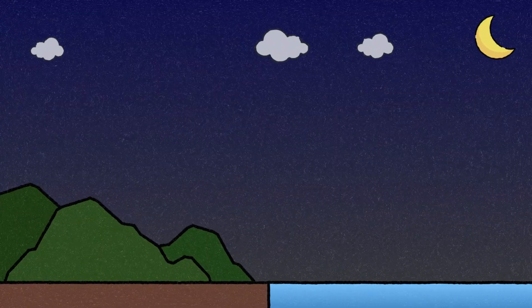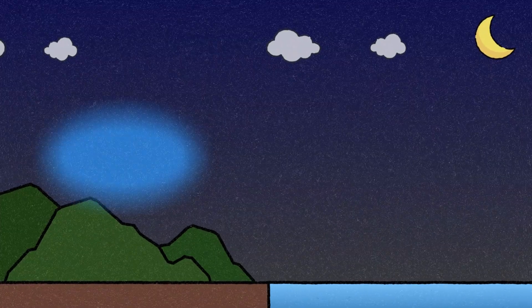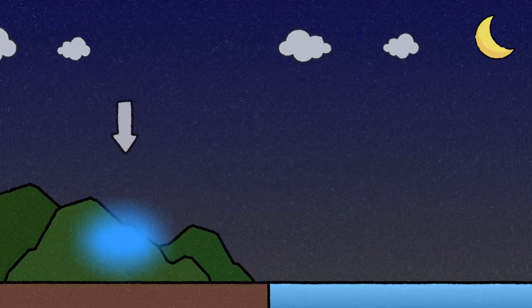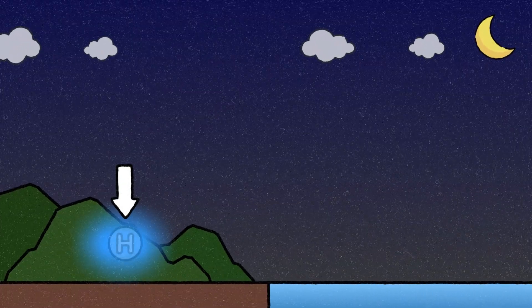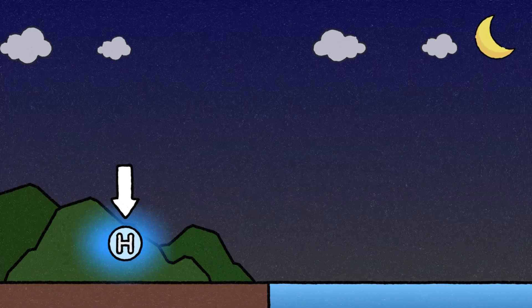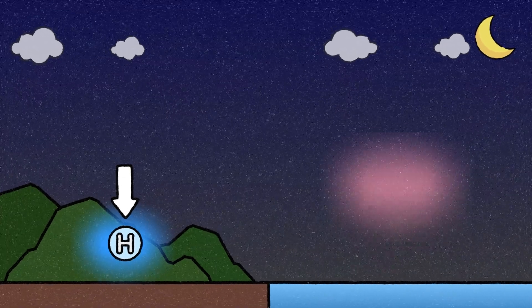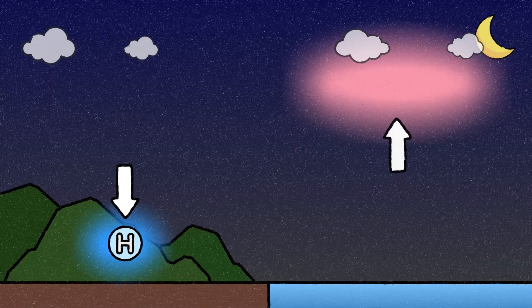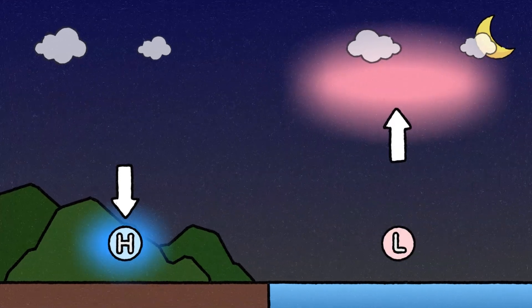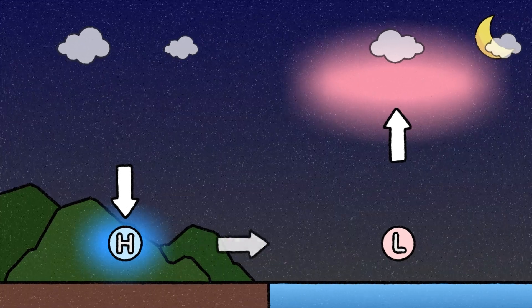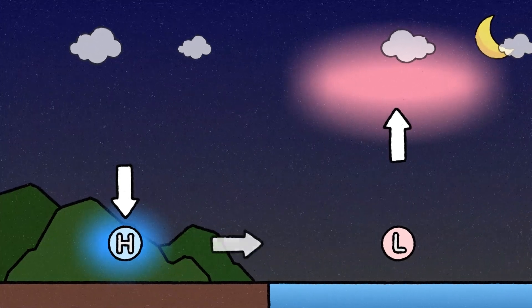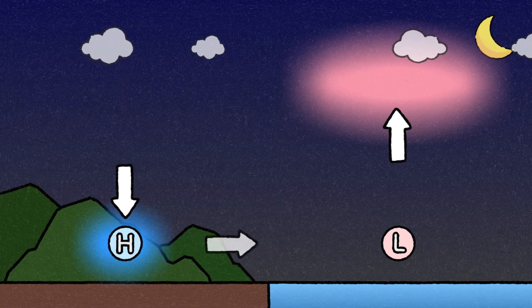At night, the situation reverses. The land cools down faster than the sea, causing the air over the land to become cooler and denser, forming a high pressure area. Meanwhile, the sea stays warmer, leading the air above it to rise and create a low pressure area. As air again moves from high pressure areas to low pressure areas, the cooler air from the land flows toward the sea, producing a land breeze.